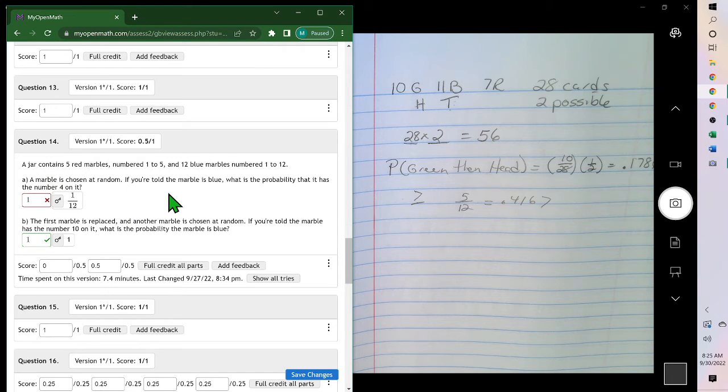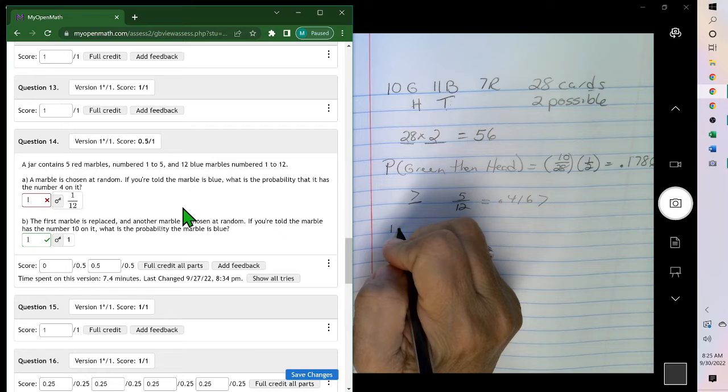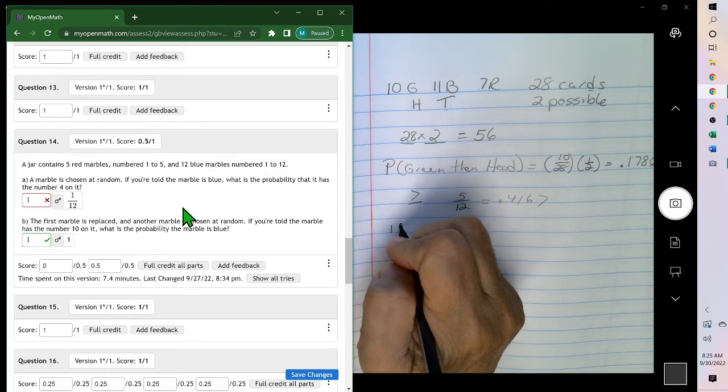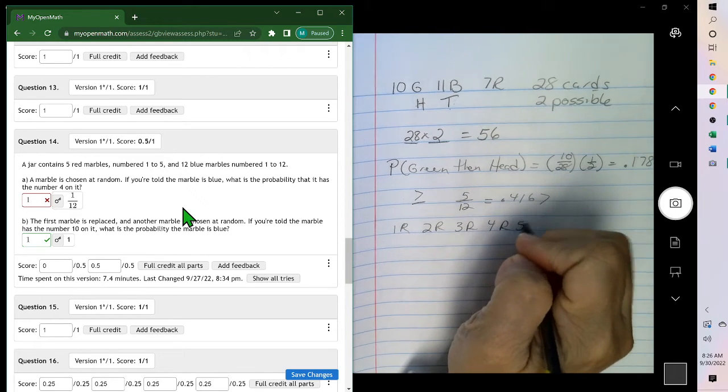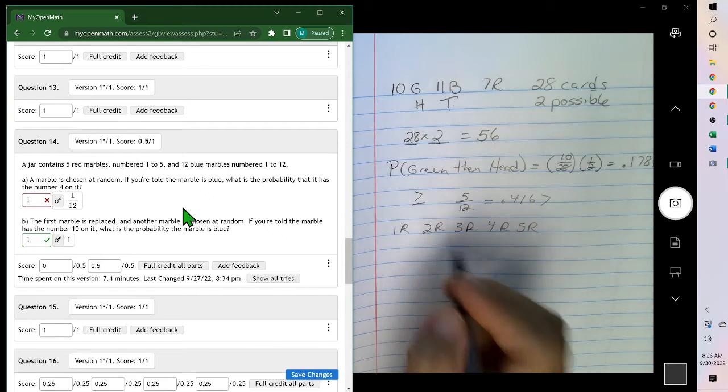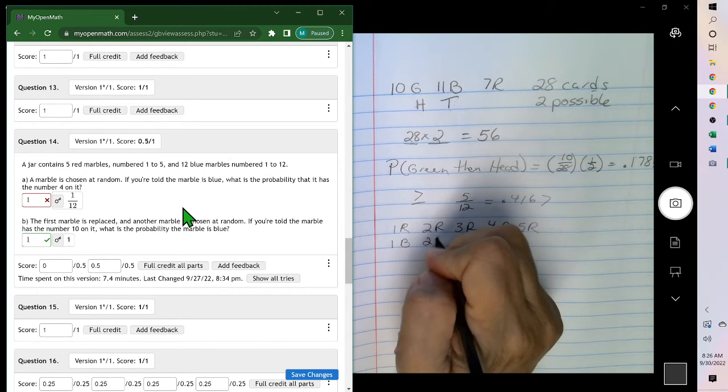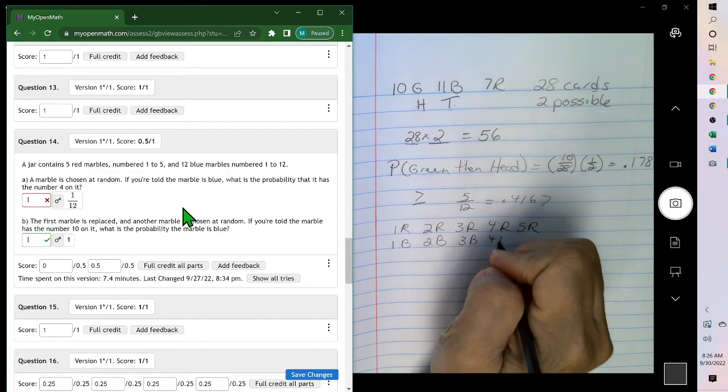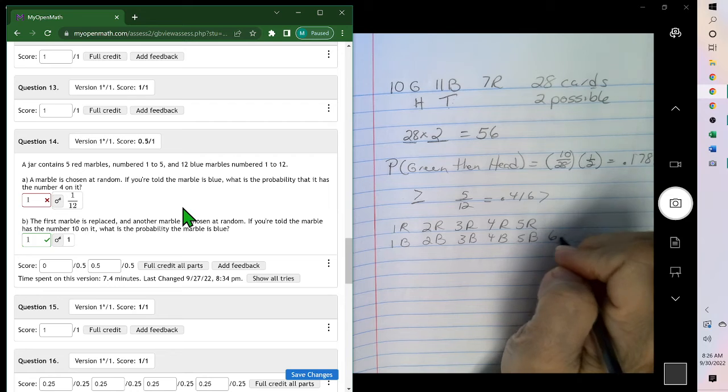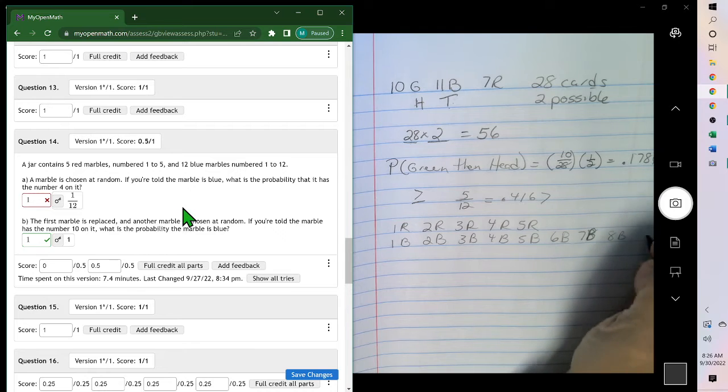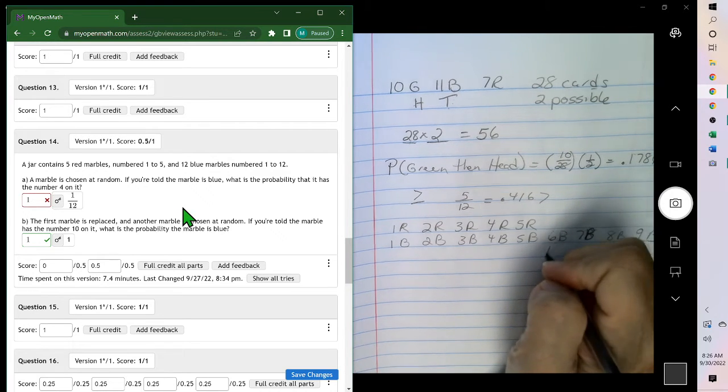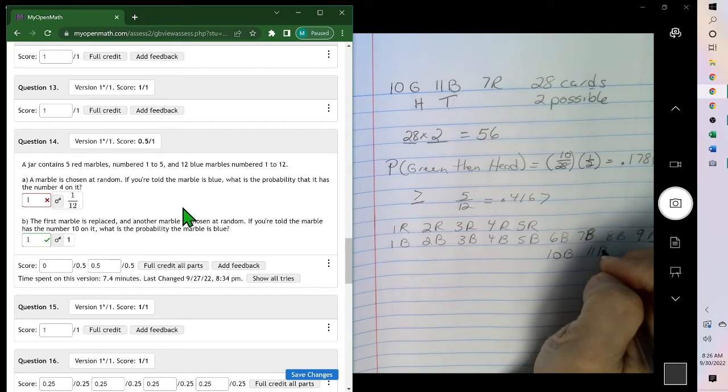A jar contains 5 red marbles numbered 1 through 5 and 12 blue marbles numbered 1 through 12. So that's like 1, red, 2 red, 3 red, 4 red, 5 red. And then the blue, 1 blue, 3 blue, 4 blue, 5 blue, 6 blue, 7, 8, 9, 10, 11, and 12.